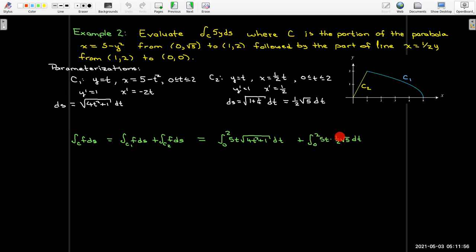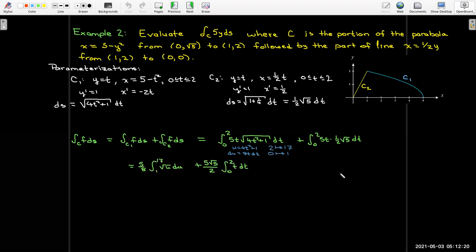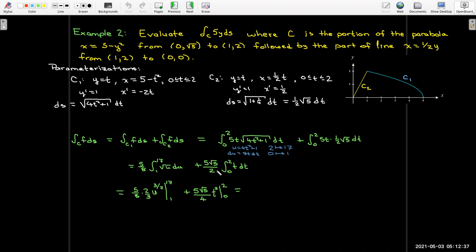Let's make our u substitution. Also change the bounds to be in terms of u. When t = 0, u = 1. When t = 2, u = 17. I'll write the first integral now in terms of u, and I'll pull out all of these constants in front of the second integral. Take the antiderivative, and then we can evaluate those.